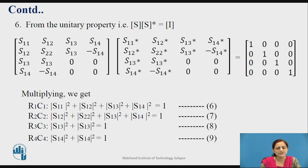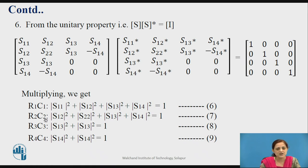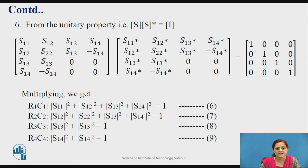From the unitary property — the scattering matrix multiplied with the complex conjugate of that scattering matrix — each parameter is complex conjugated, which equals the unitary matrix. By solving these equations, taking the combination of row 1 and column 1 for the second matrix: R1C1, R2C2, R3C3, and R4C4, you can write equations 6, 7, 8, and 9.